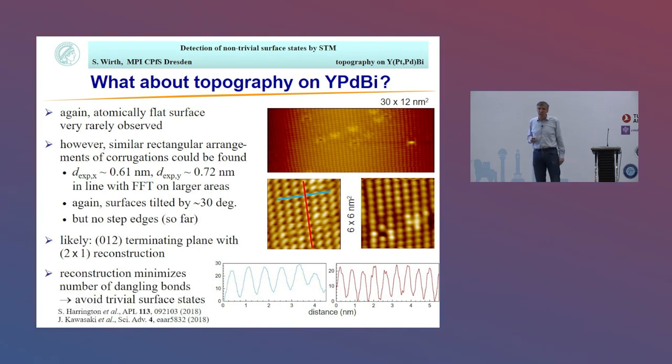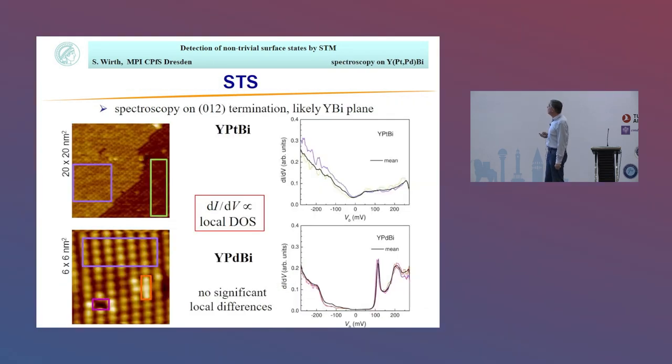The reconstruction is actually, in this case, not a bad thing because we expect dangling bonds here, and with the reconstruction we minimize the number of dangling bonds, so we avoid trivial surface states. If we look at the spectroscopy and compare different areas and also the average over the whole area shown here, we see a large difference between the two samples. In case of the platinum, as for the 111 surface, we see a finite density of states, again a V-shaped spectrum. But in case of the palladium, you see a clear gap here. So there's a clear-cut difference.